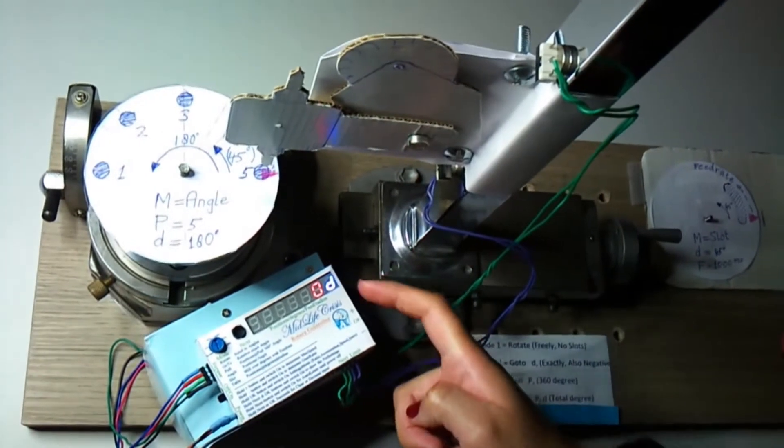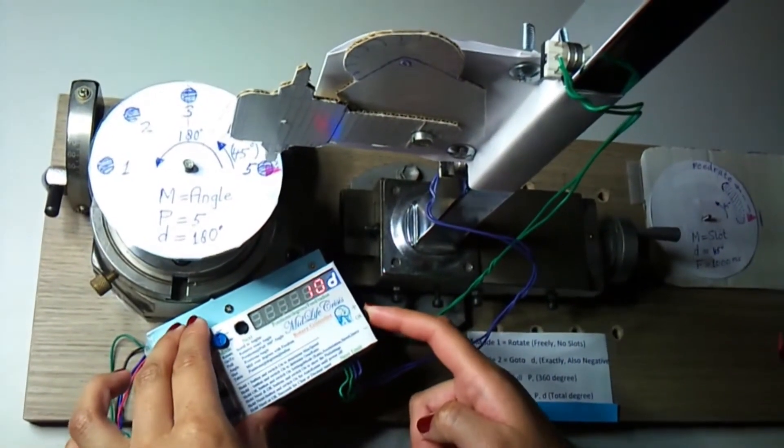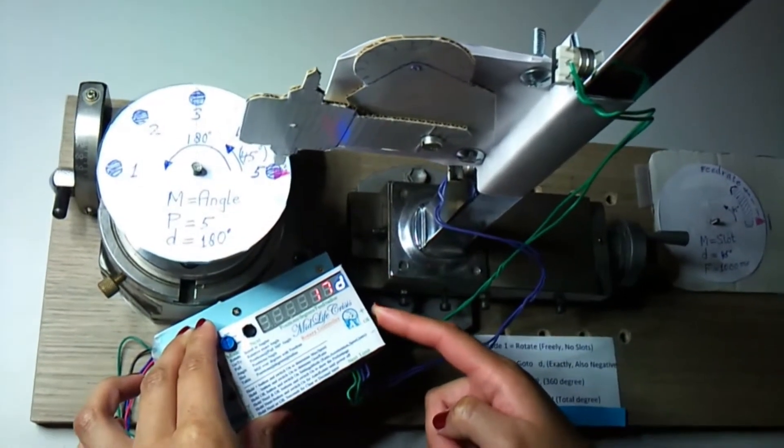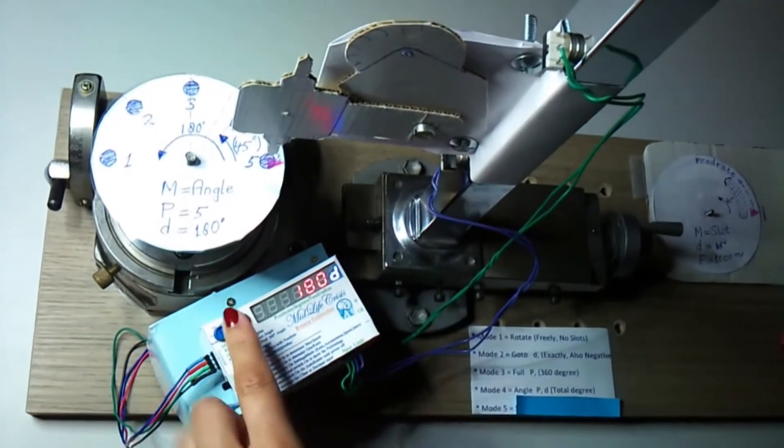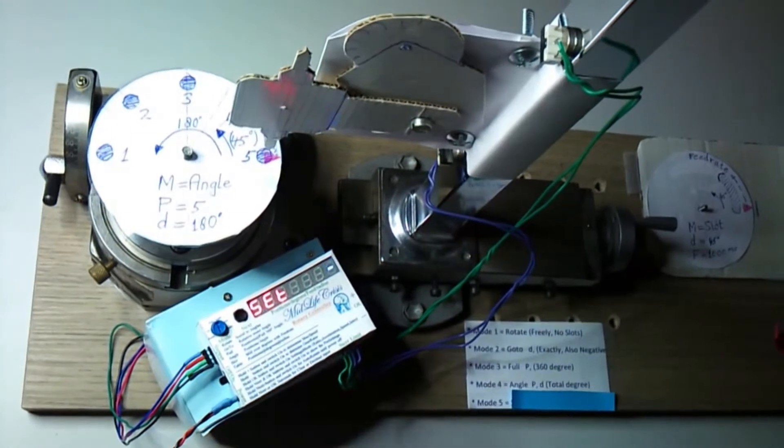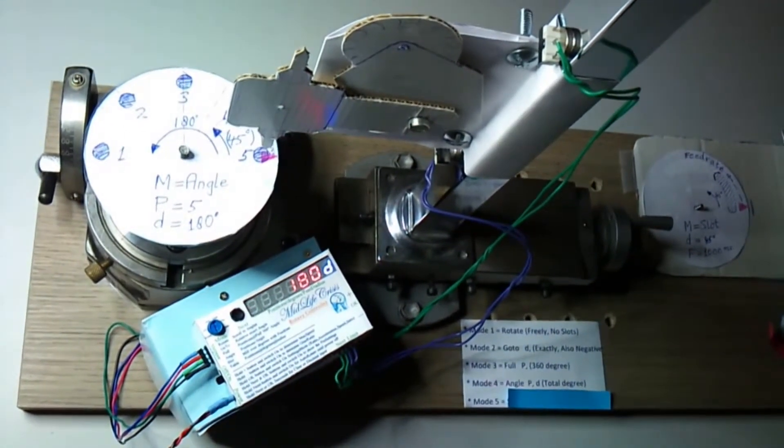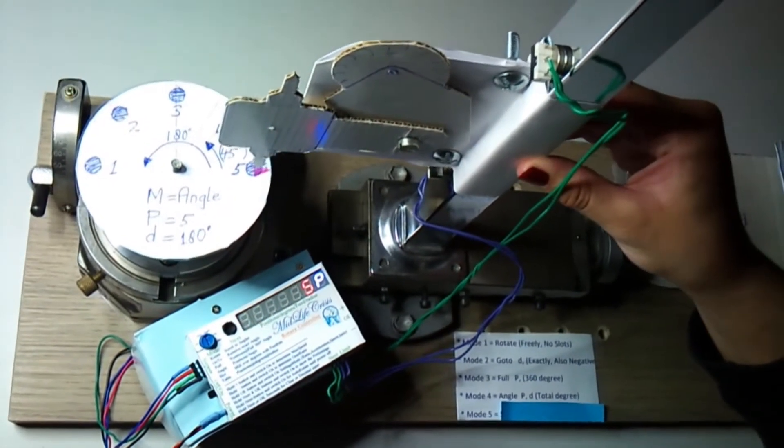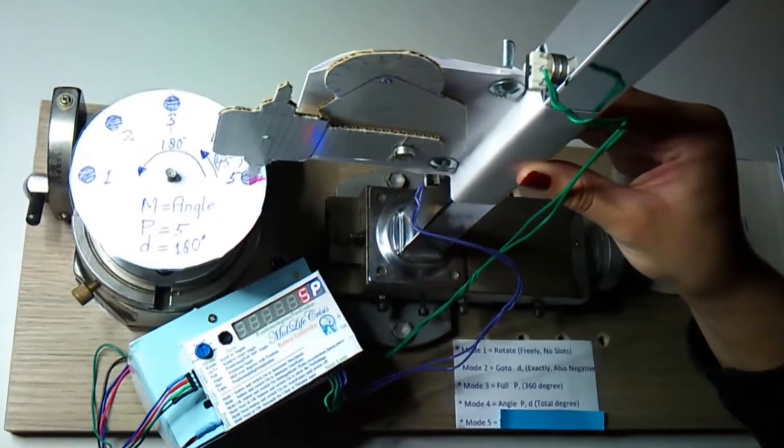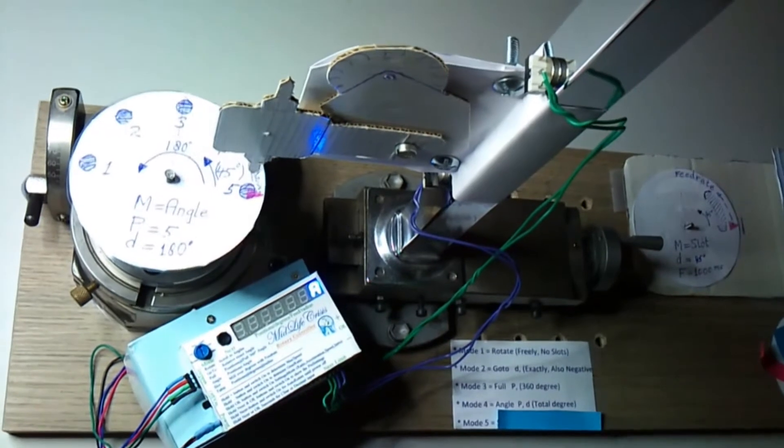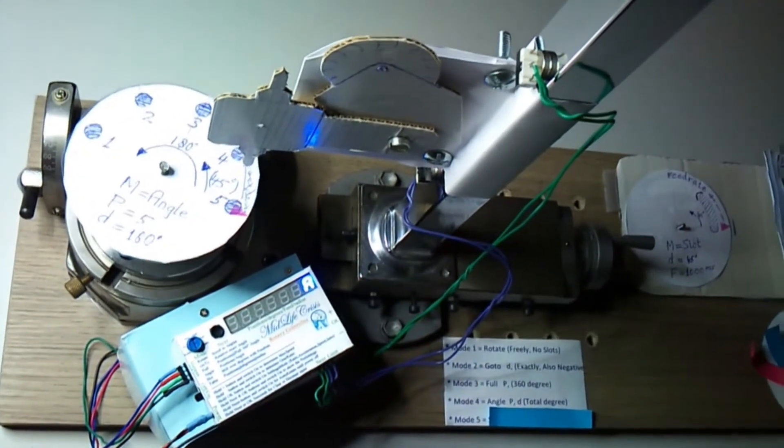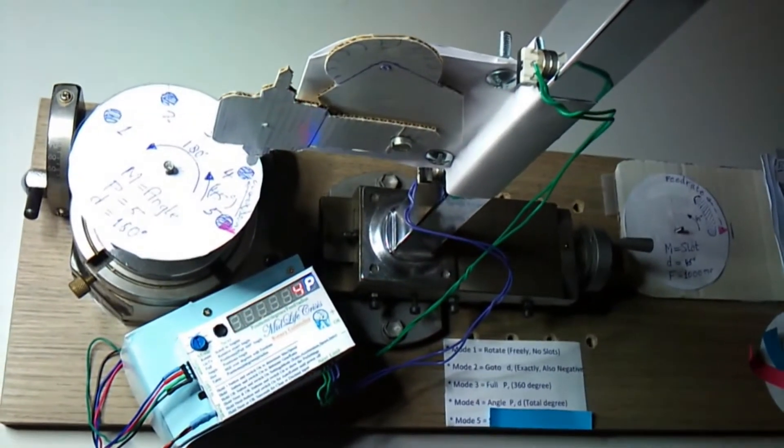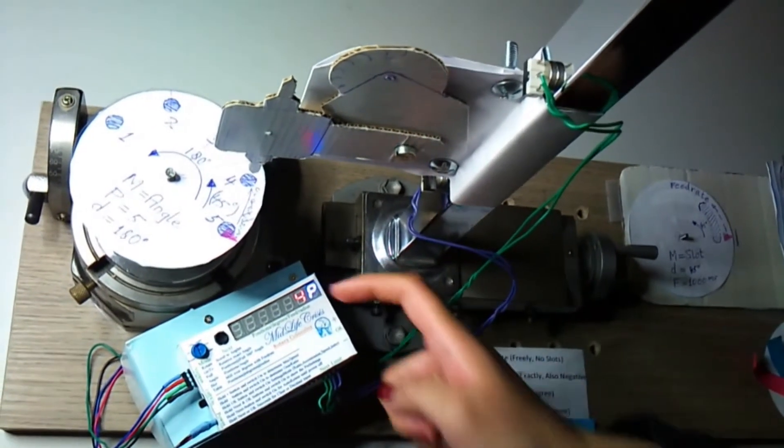We have 180 degrees. Accept the value by pressing next. Now the controller is ready. We start drilling position number five. It rotates automatically because auto was set. Now we drill position number four.